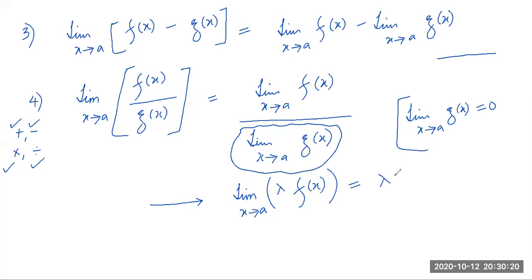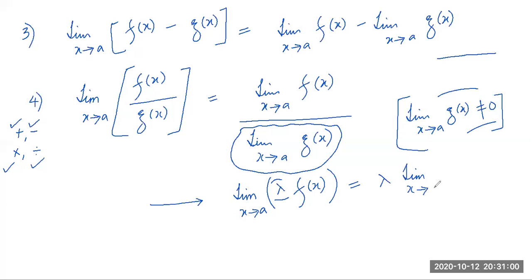A student correctly points out the condition should be that g(x) is not equal to zero — thank you. There's also one more addition to the product rule: if you have limit as x approaches a of [λ · f(x)], where λ is a constant, then λ can be taken out. Constants remain unaffected — just like in integration or differentiation. So this equals λ · limit as x approaches a of f(x).